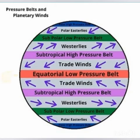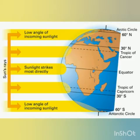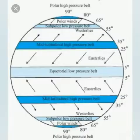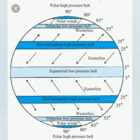We studied the equatorial low pressure belt. The sun's heat is more in the region of the tropic of Cancer and the tropic of Capricorn, so naturally the temperature will also be high. This high temperature makes the air heat up — it then expands and moves towards the sky, and this leads to the formation of a low pressure belt.